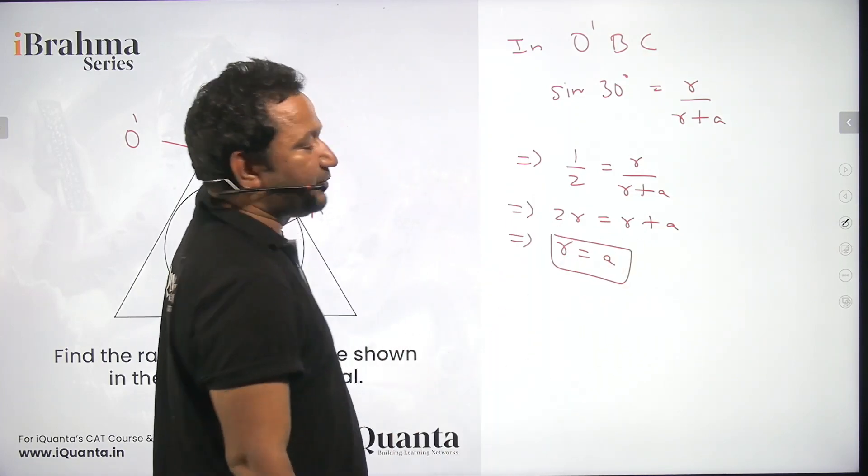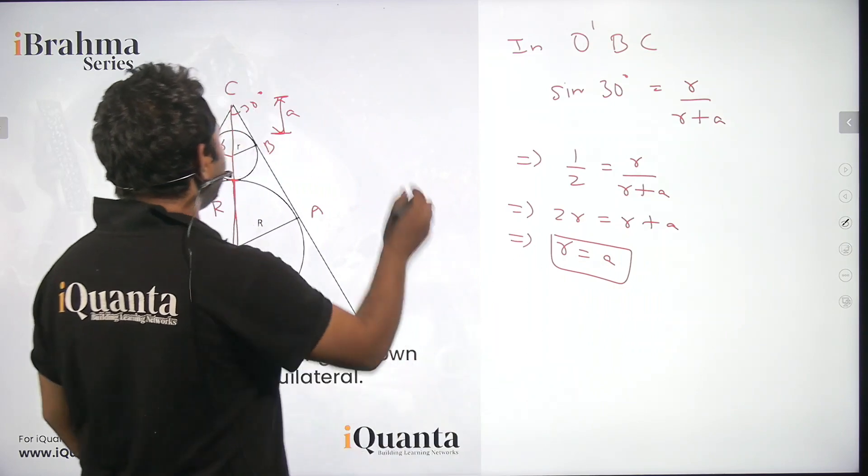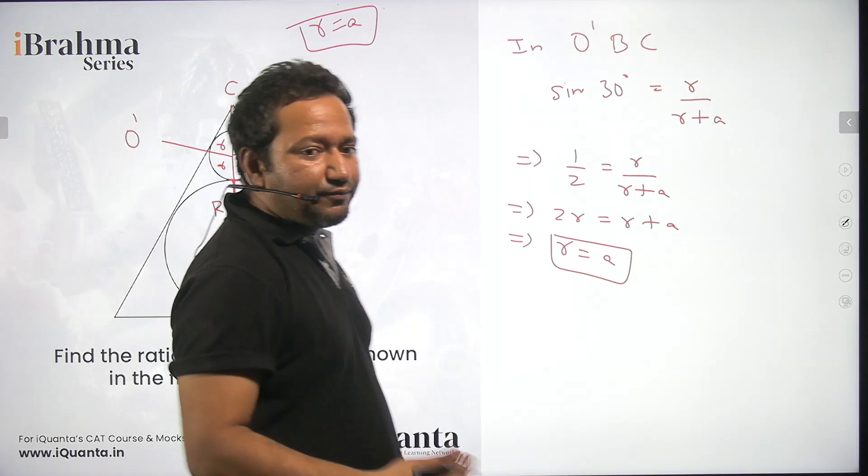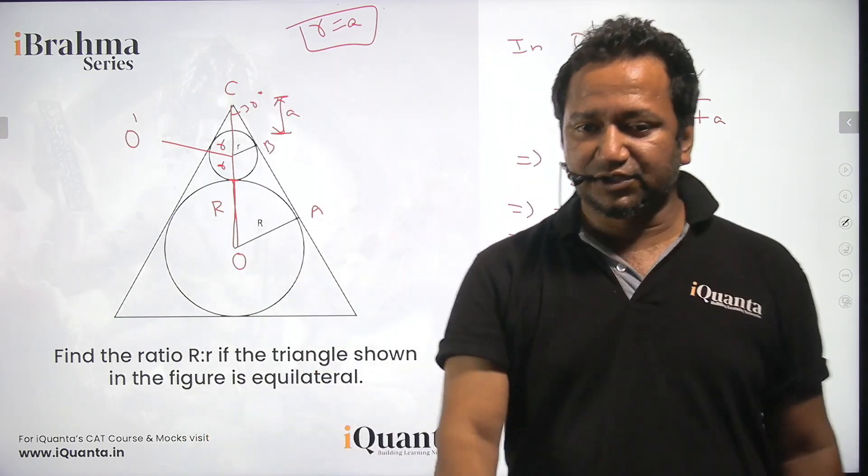This is what we have established till now that small r is equal to a. I'll just write it over here, small r is equal to a. This is the observation which will be helpful for us for finding the solution to this question.